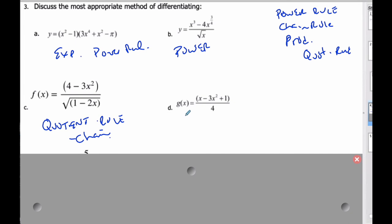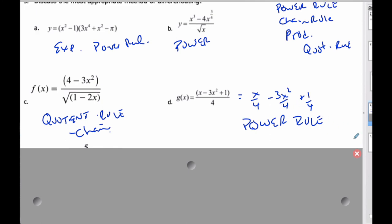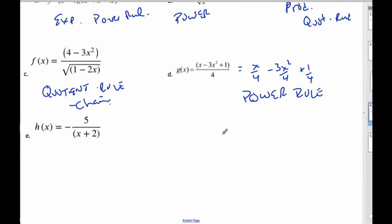Looking at d part next, well, I have dividing here, but what is easiest to do is rewrite this as x over 4 minus 3 squared over 4 plus 1 over 4, and now apply the power rule. Oftentimes, whenever you can apply the power rule, it is often a better approach.